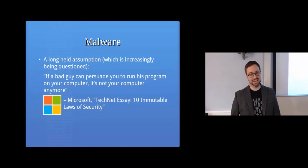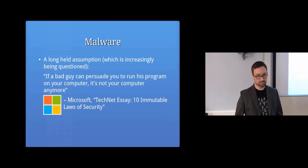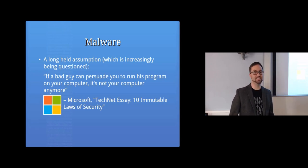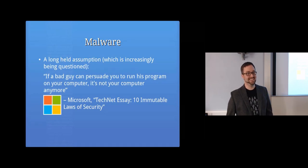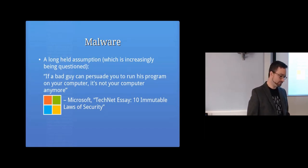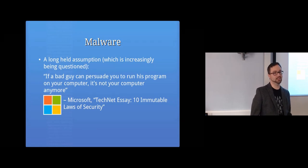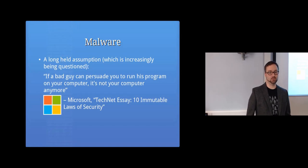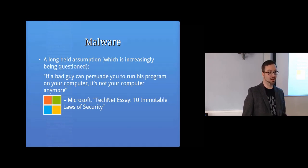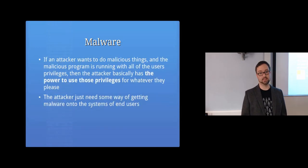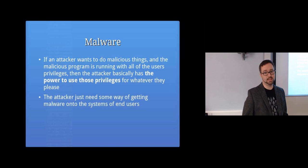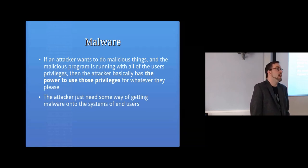Microsoft has a TechNet essay called 'The Ten Immutable Laws of Security.' One of the best quotes from it is: 'If a bad guy can persuade you to run his program on your computer, it's not your computer anymore.' That was the design — a program on your computer can do practically anything, using whatever permissions you've given it to do whatever that program likes.